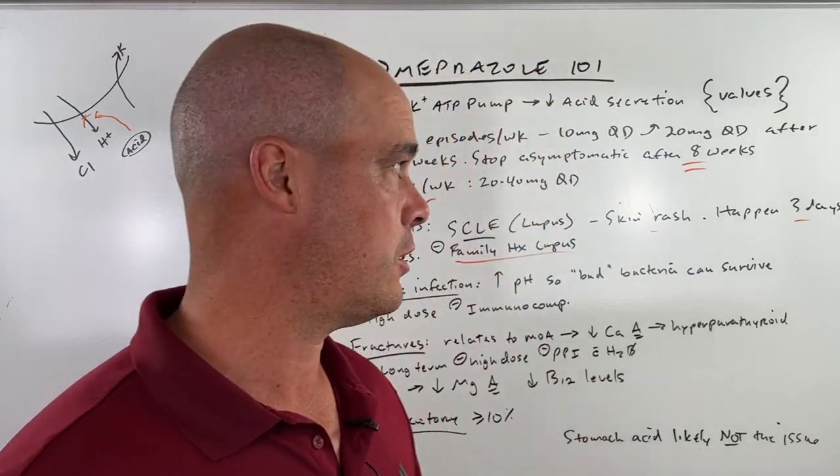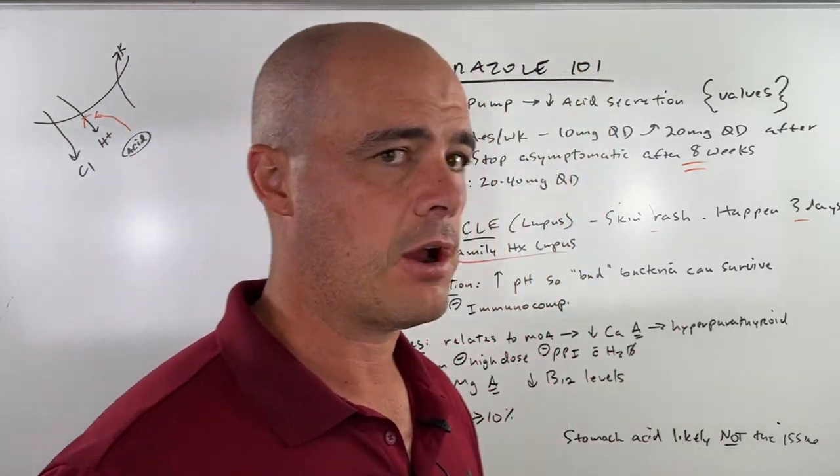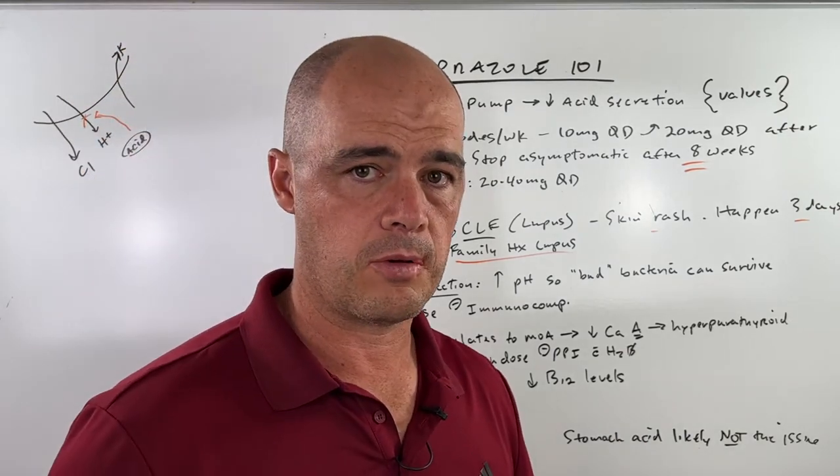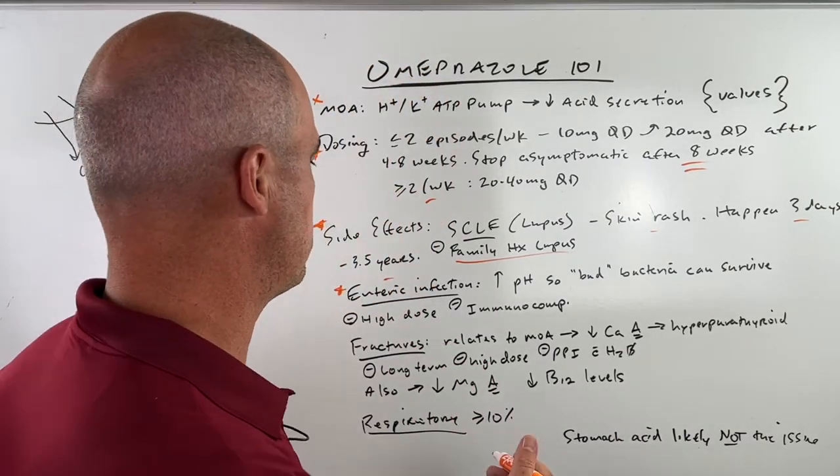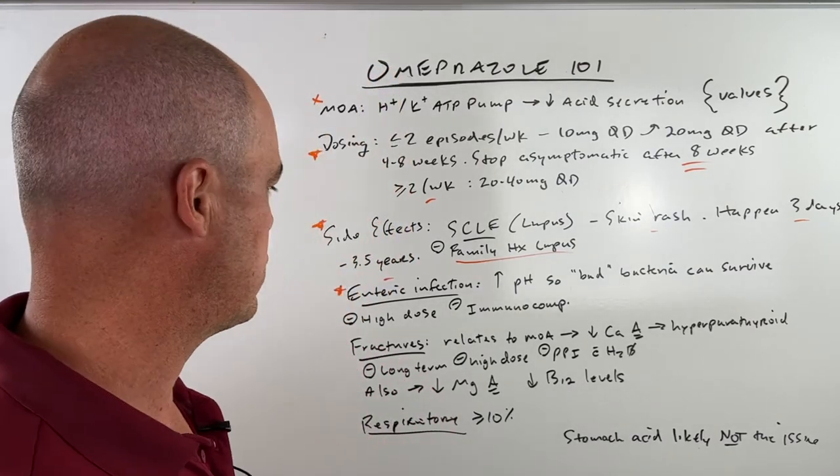When you make it less acidic, you can get bad bacteria that can survive in that environment. For example, norovirus, E. coli, those sorts of things. So you can see some of these stomach infections.